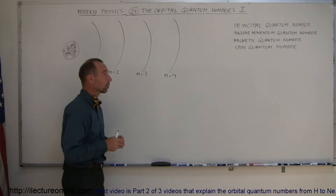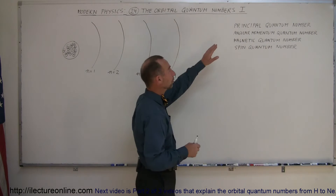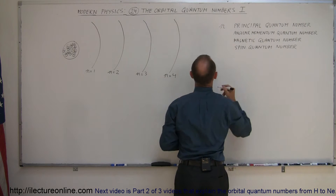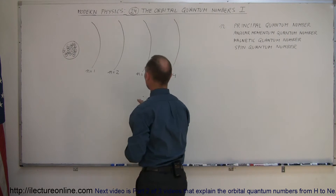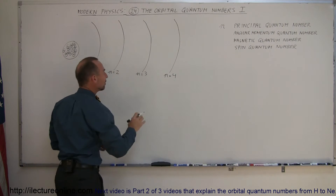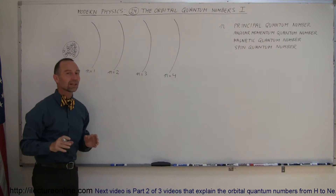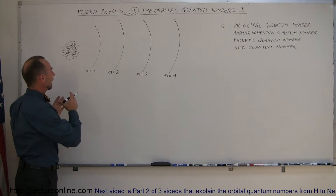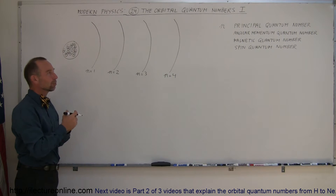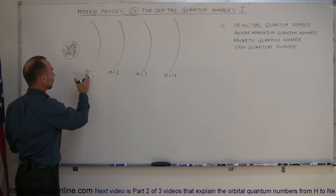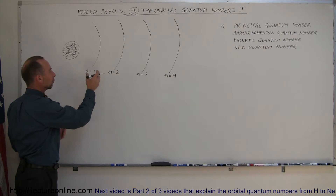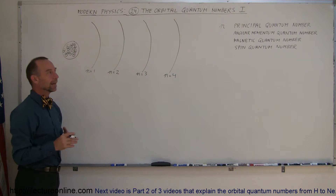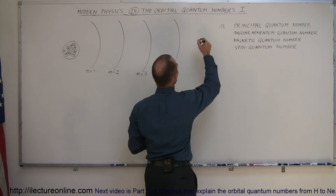The four quantum numbers are called the principal quantum number — let's start with this one. We use the letter N for that, and N corresponds to the various energy levels. Each energy level is defined by its principal quantum number. If you're in the first energy level, N equals one; the second energy level, N equals two, and so forth. These are called shells.